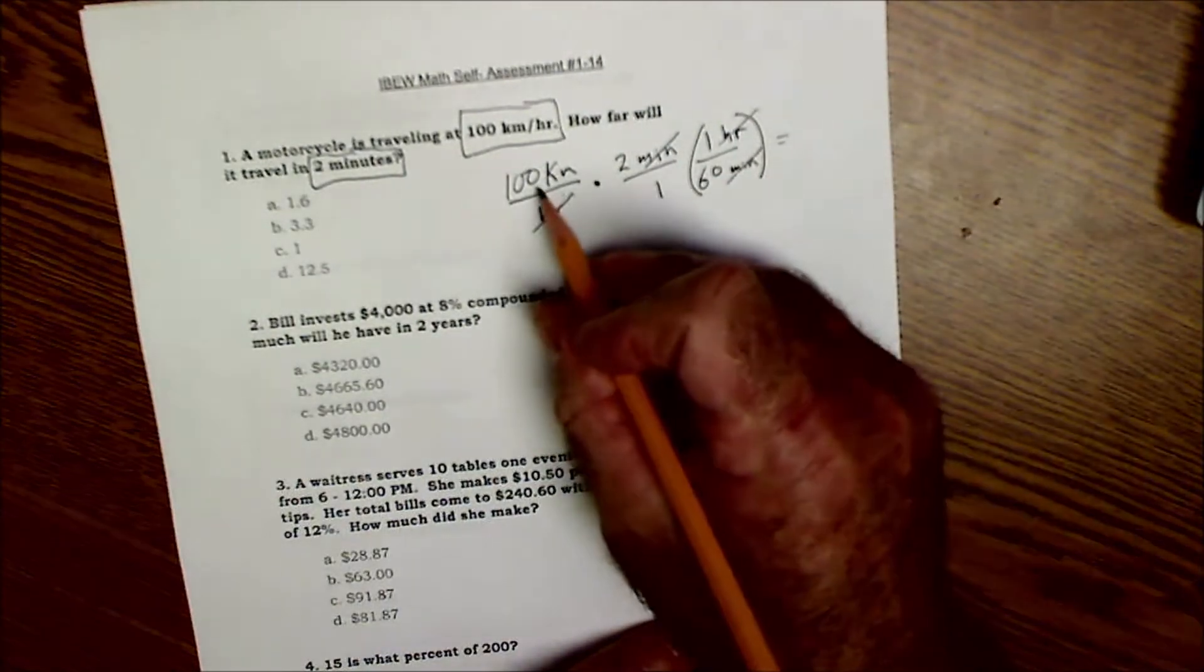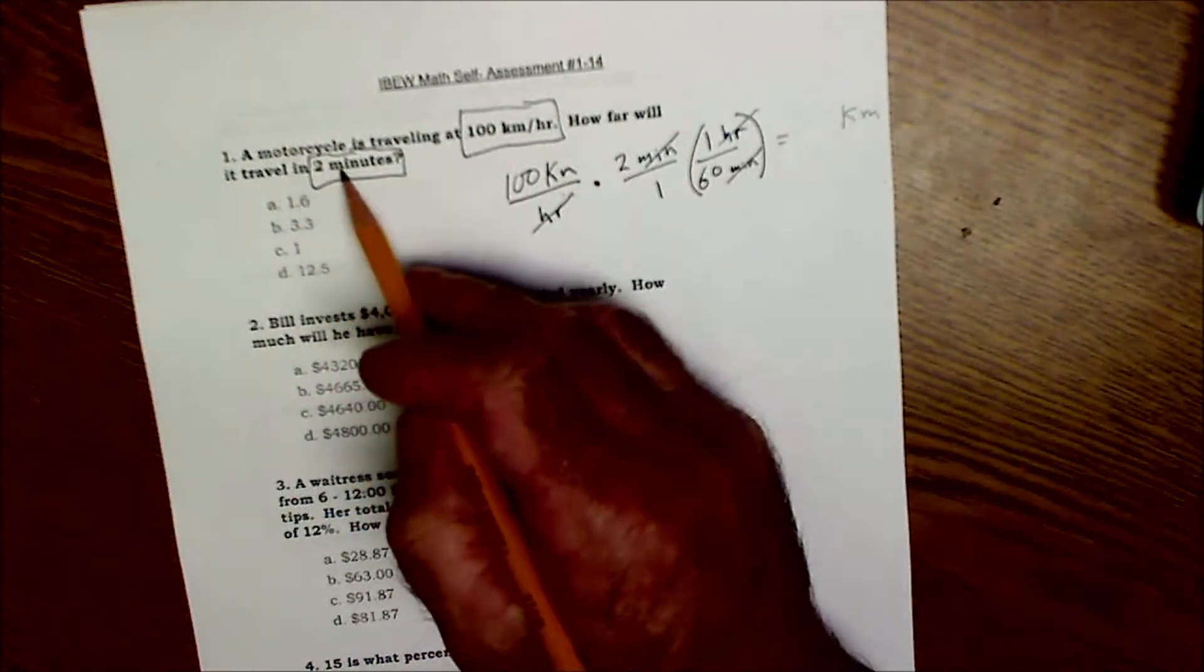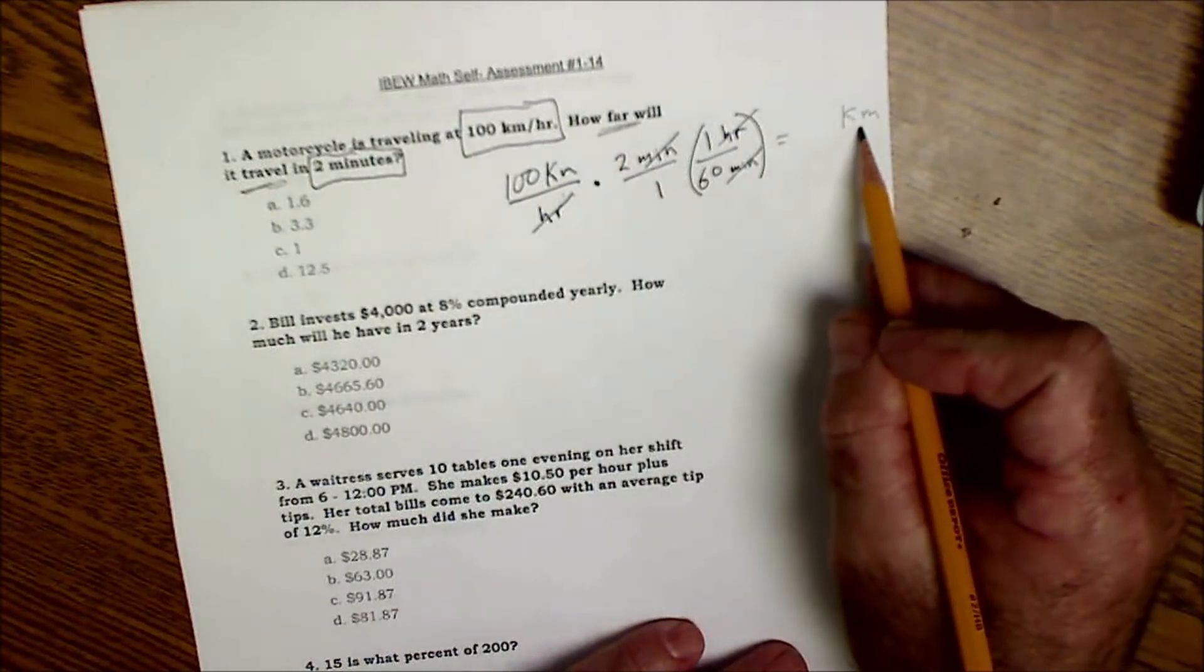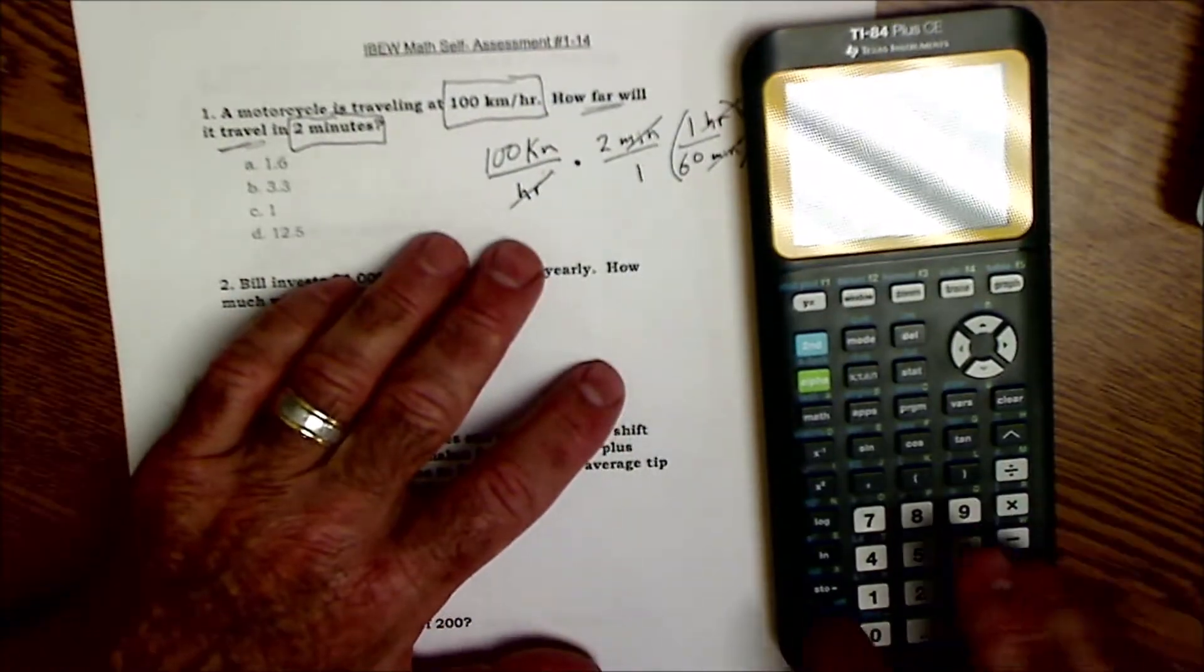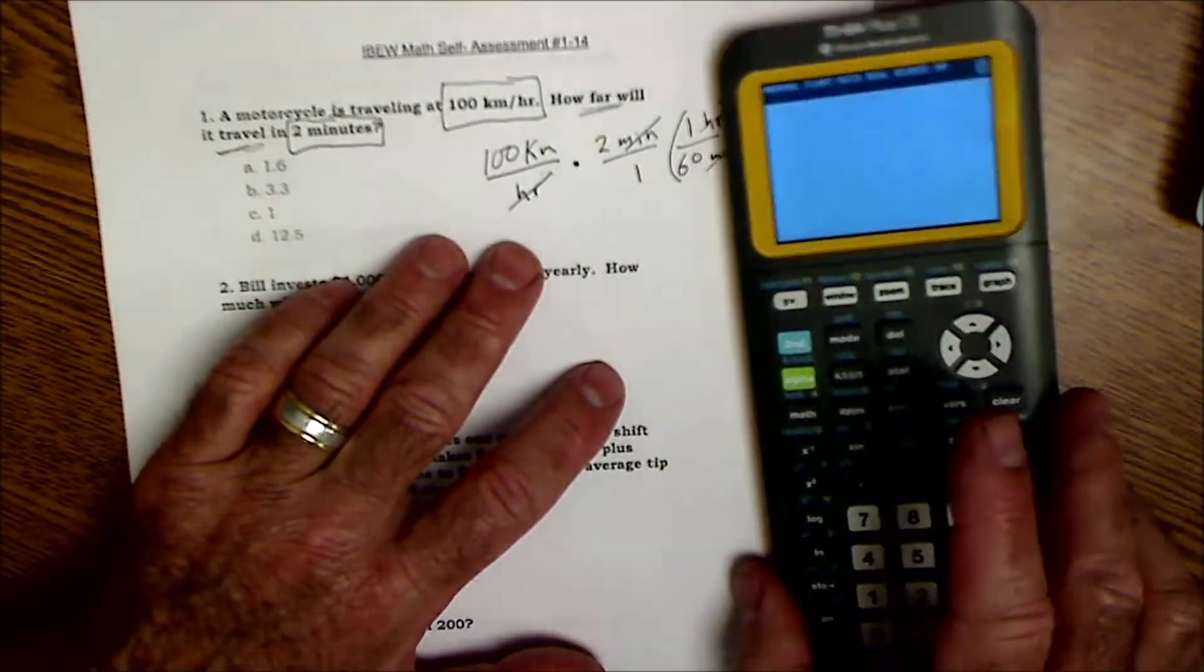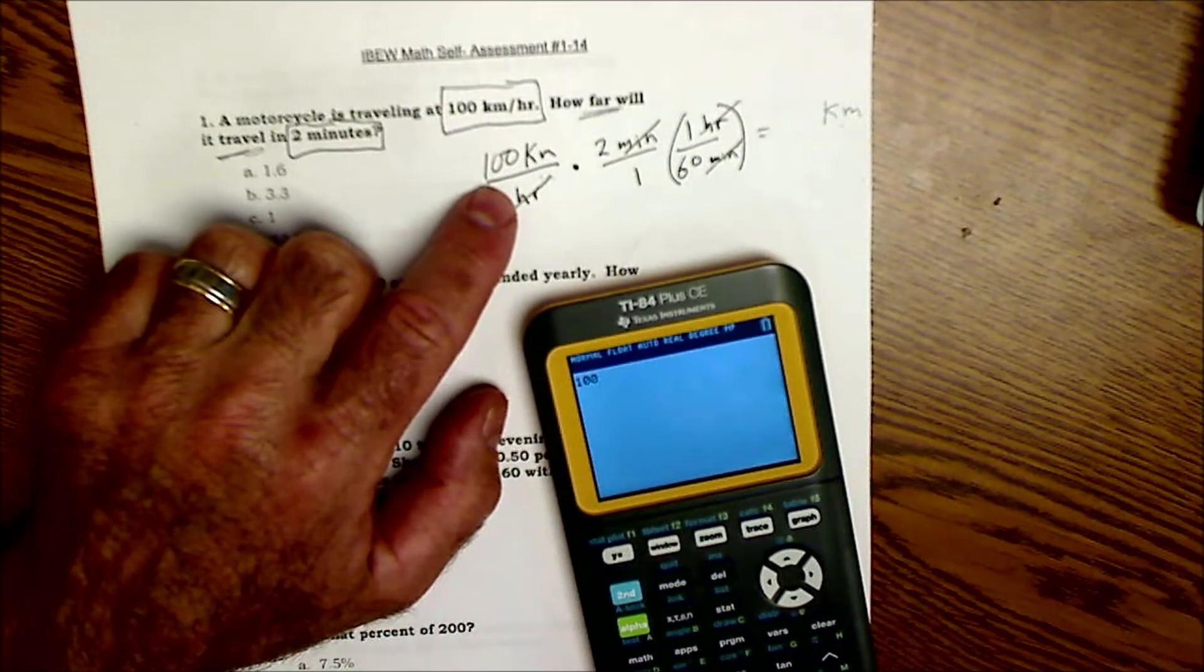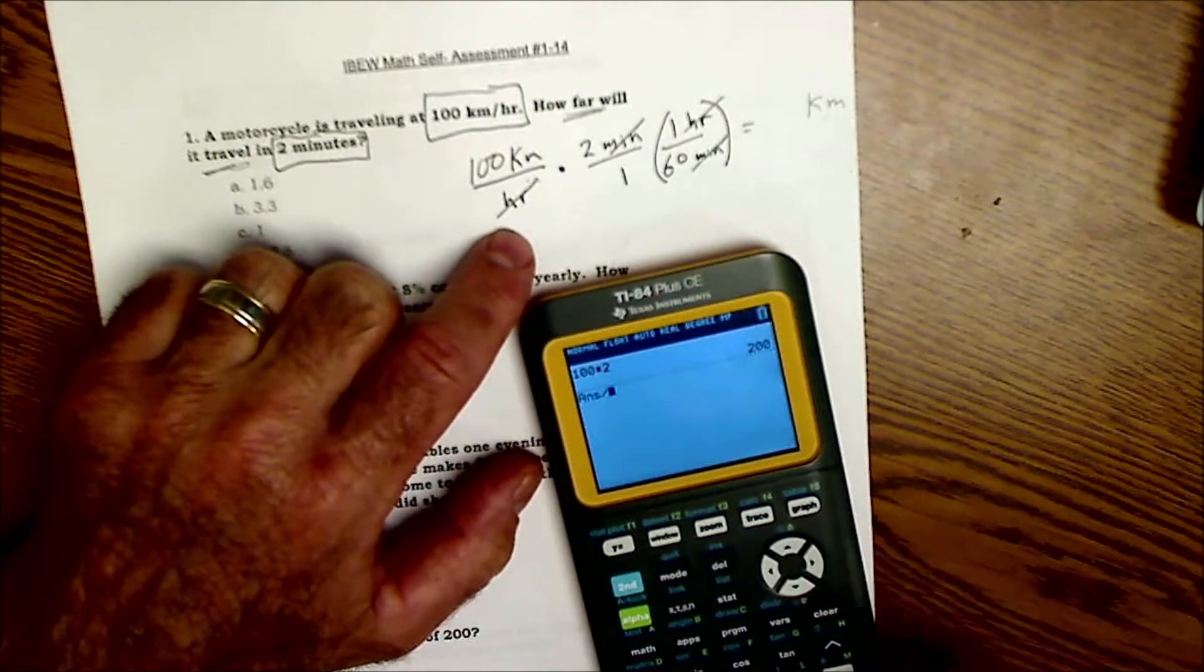And that'll leave my answer as far as units go in kilometers, and that's what I'm asked. How far will they travel? Well I want kilometers, I want my time to cancel out. Use a calculator on this. I'm going to just multiply across the top: 100 times 2 divided by 60, and that gives me 3.3 kilometers.